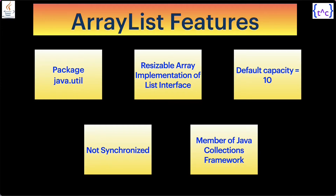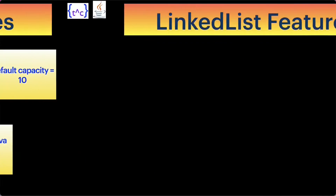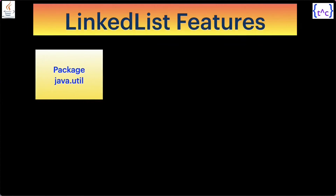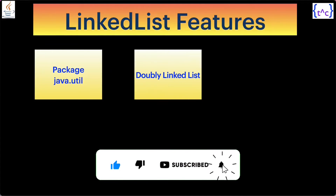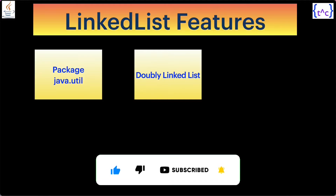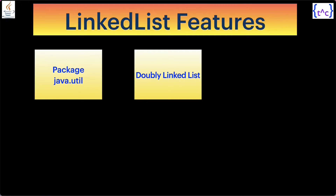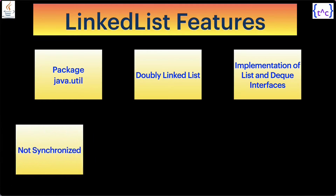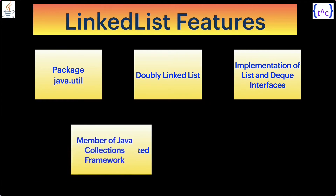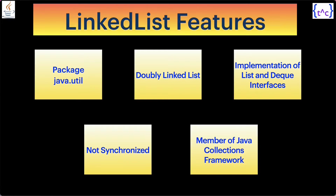Now let us have a look at LinkedList features. It is again part of the java.util package. It is an implementation of a doubly linked list — an important data structure we all know. LinkedList is an implementation of the List and Deque interfaces. It is not synchronized by nature, and it is a member of the Java collections framework.